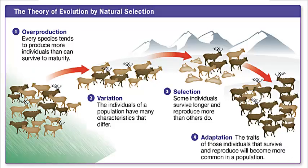Thus Darwin inferred that unequal reproductive success leads to organisms that are best suited for their local environment and will be more likely to survive and reproduce. Additionally, as a result of this unequal reproductive success over many generations, a higher and higher proportion of individuals in the population will have the advantageous trait — the adaptation.